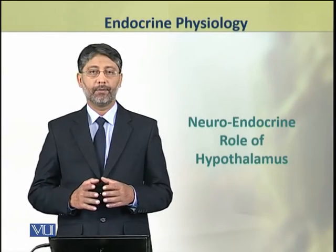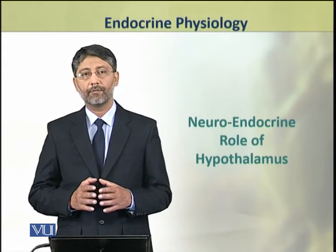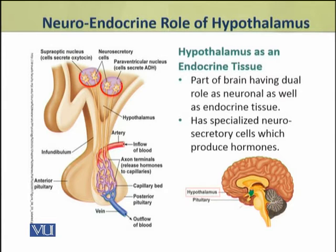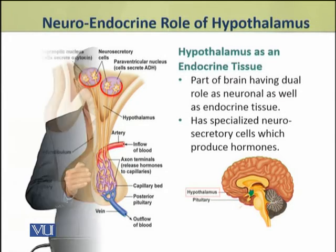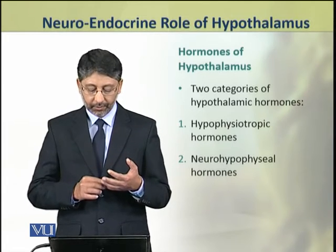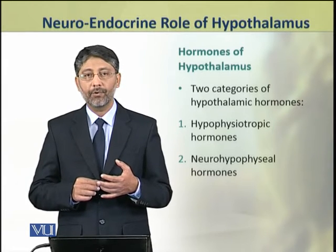In this topic we shall discuss the neuroendocrine role of hypothalamus. The hypothalamus is the part of brain which has dual role as neuronal as well as endocrine tissue. It has specialized neurosecretory cells which produce hormones. There are two categories of hypothalamic hormones: first are the hypophysiotropic hormones and the other are the neurohypophysial hormones.